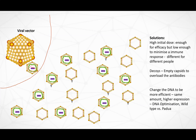This is vastly oversimplified. We can also change the DNA to be more efficient — same amount of DNA but much higher expression — that's called DNA optimization. What we see in factor nine in particular is we have a wild type versus a Padua variant. You get a much higher expression for the same amount using the Padua than for a wild type.